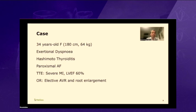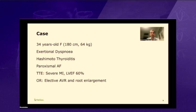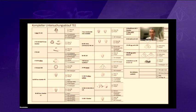She had exertional dyspnea, Hashimoto thyroiditis, and paroxysmal atrial fibrillation. On preoperative echo, she knew she had mitral regurgitation since childhood and was followed with serial echos for many years. The last echo showed severe mitral regurgitation with an ejection fraction of 60%. She was scheduled for mitral valve repair with a minimally invasive approach.